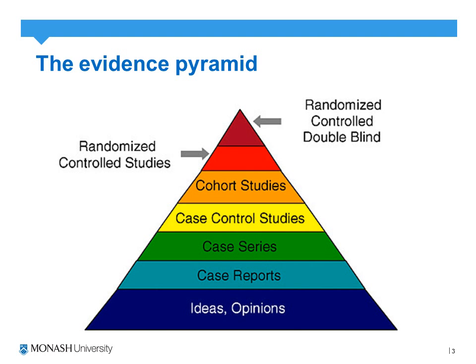Here we have the evidence pyramid, and as usual at the top we have our randomized controlled trial, followed by our cohort study, case control study, case series, case reports, and ideas and opinions down the bottom.